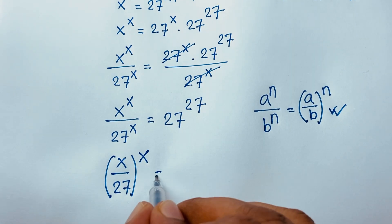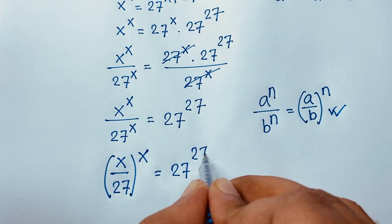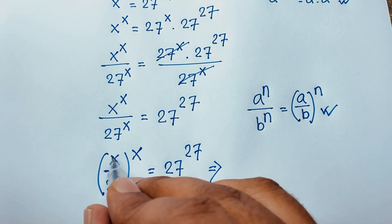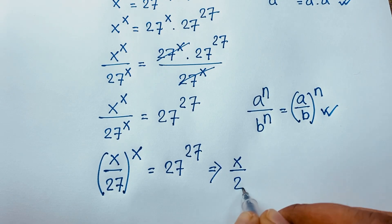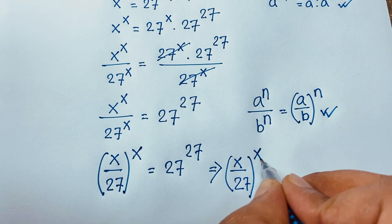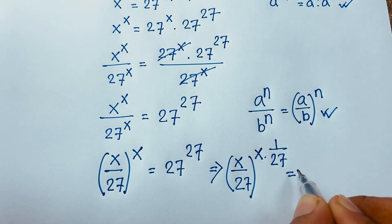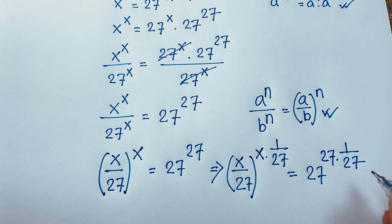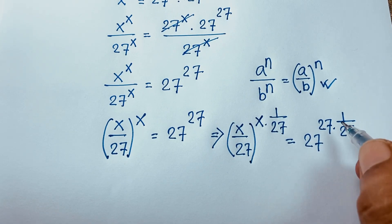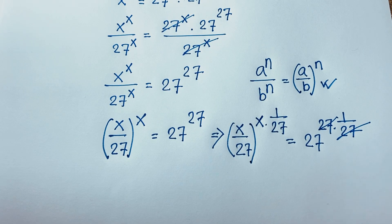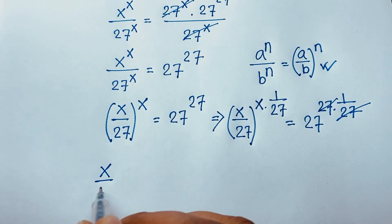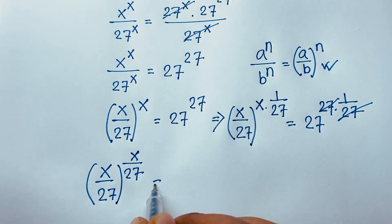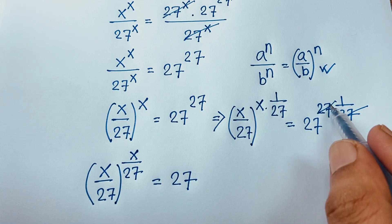This equals 27 power 27. Now I apply exponent 1 over 27 to both sides. So it will be (x over 27) to the power x, raised to 1 over 27, equals 27 to the power 27, raised to 1 over 27. The exponents on the right simplify: 27 times 1 over 27 equals 1, giving us 27. These cancel out and we find (x over 27) to the power x over 27 is equal to 27.